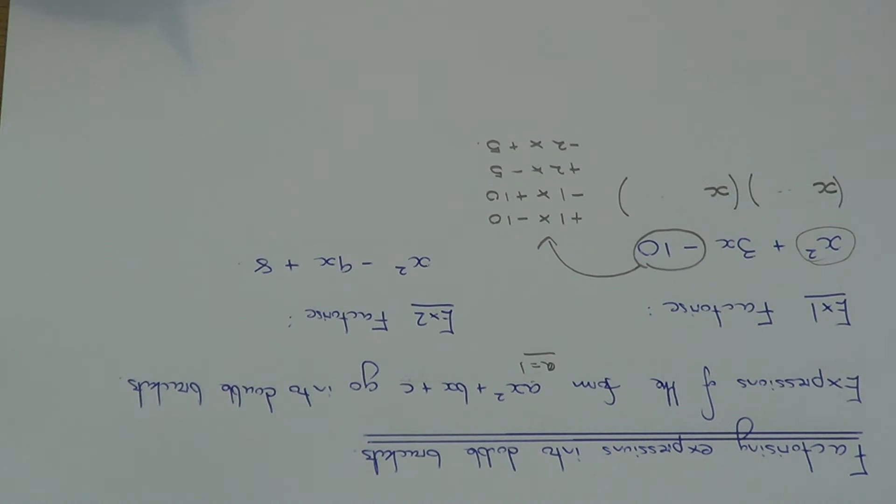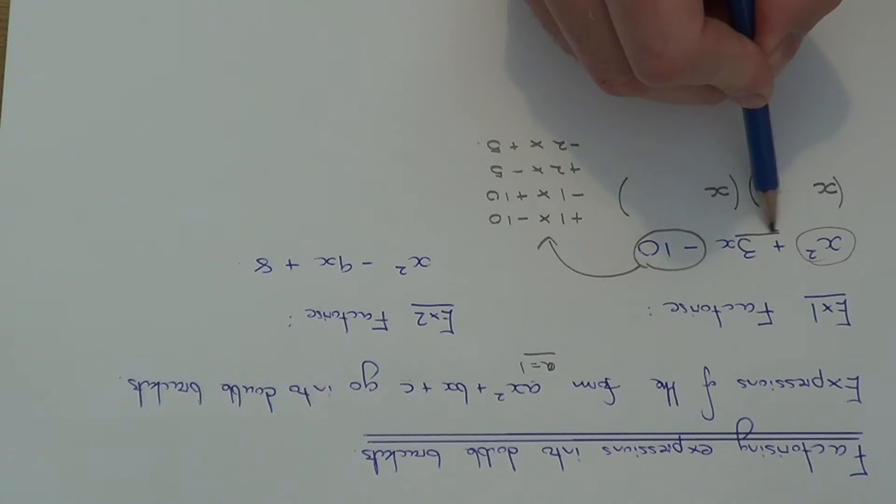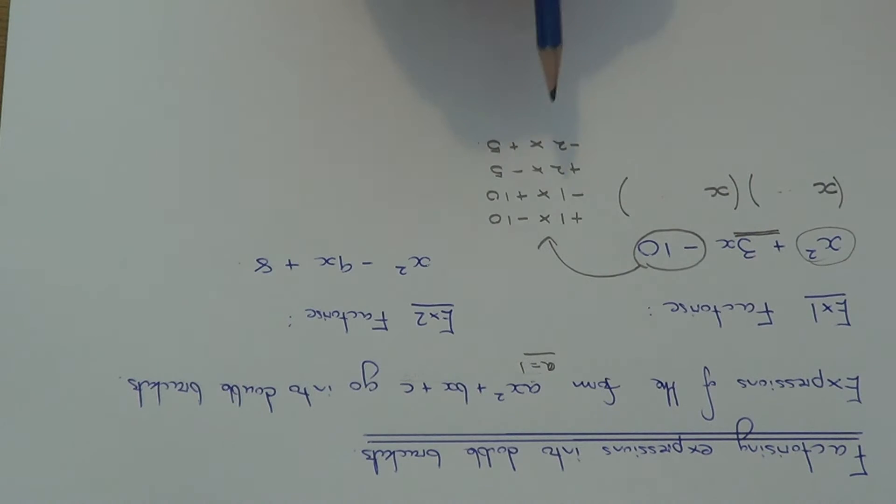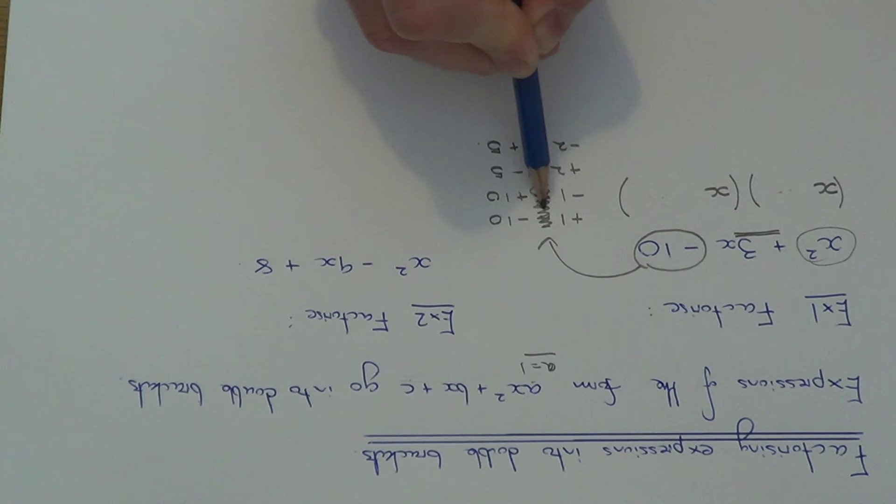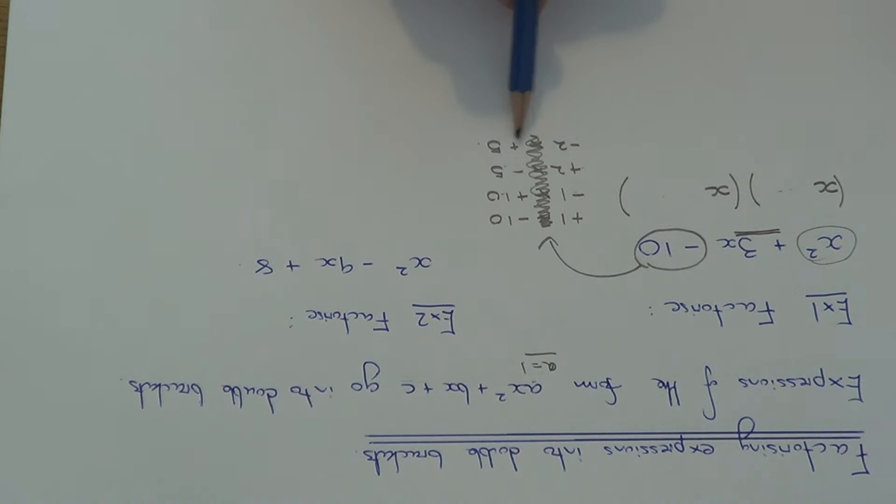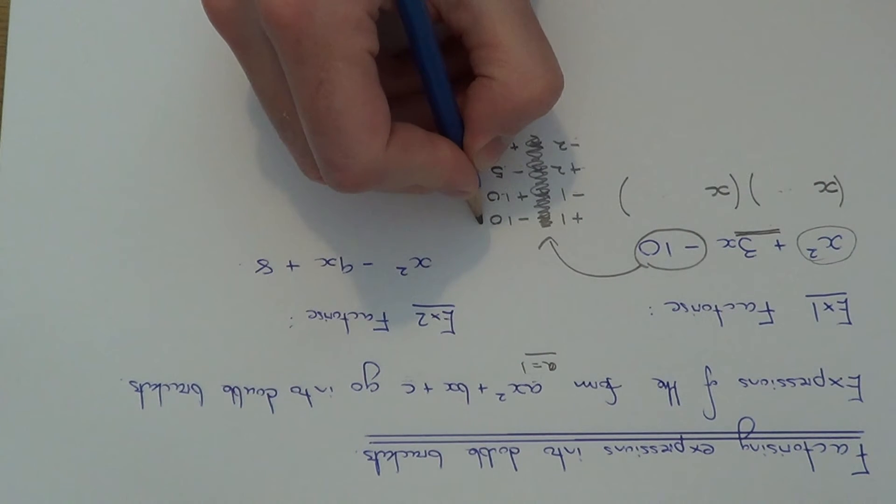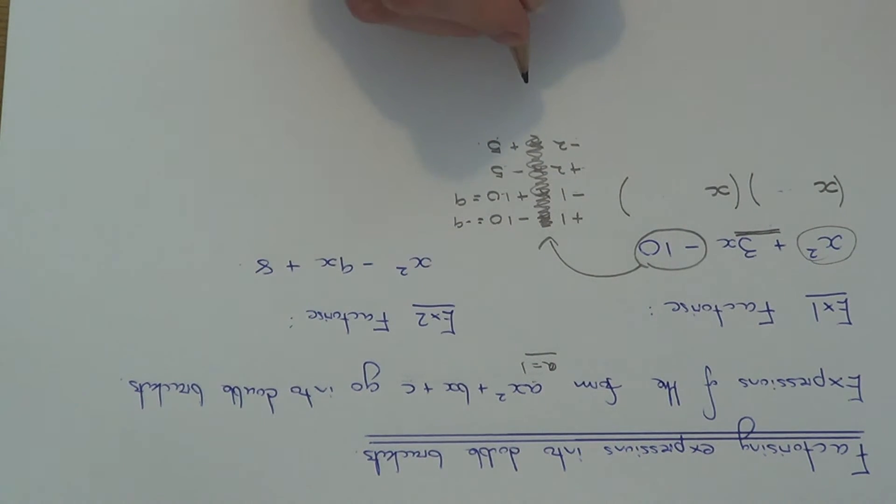So the next thing you do then, is we need to now decide which one of these pairs give us the middle term plus 3. So if we ignore the multiplication signs, which one of these four sums will give us plus 3? Well, plus 1 take away 10, that will give us minus 9. Minus 1 plus 10 is plus 9. 2 take away 5 is minus 3. And minus 2 plus 5 is plus 3.